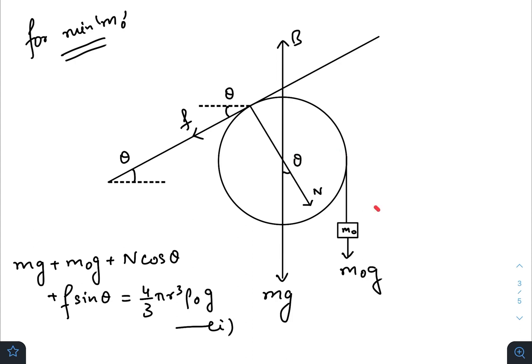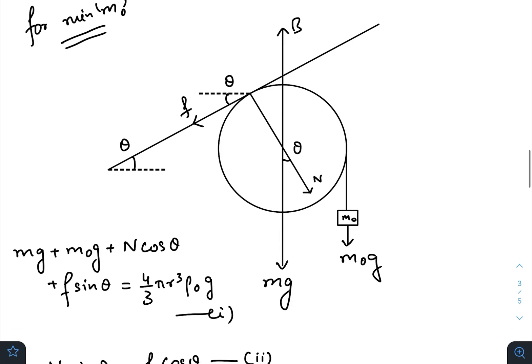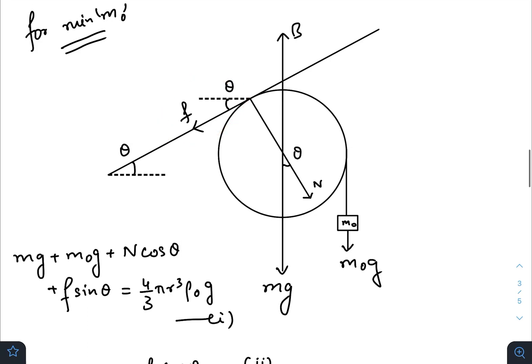So this is the free body diagram for minimum value of m0. Normal is there, friction there, because if you start decreasing m0 further, it will start to roll in this way and it will travel upwards. And that cannot happen, fine.